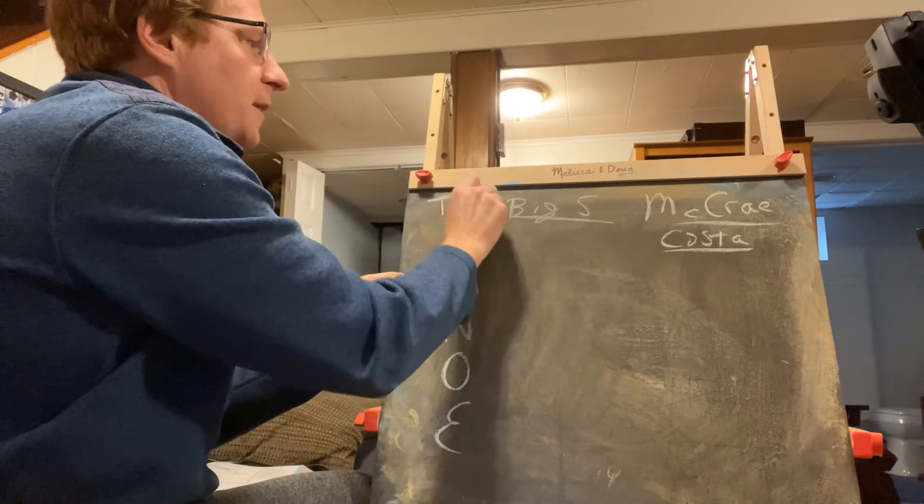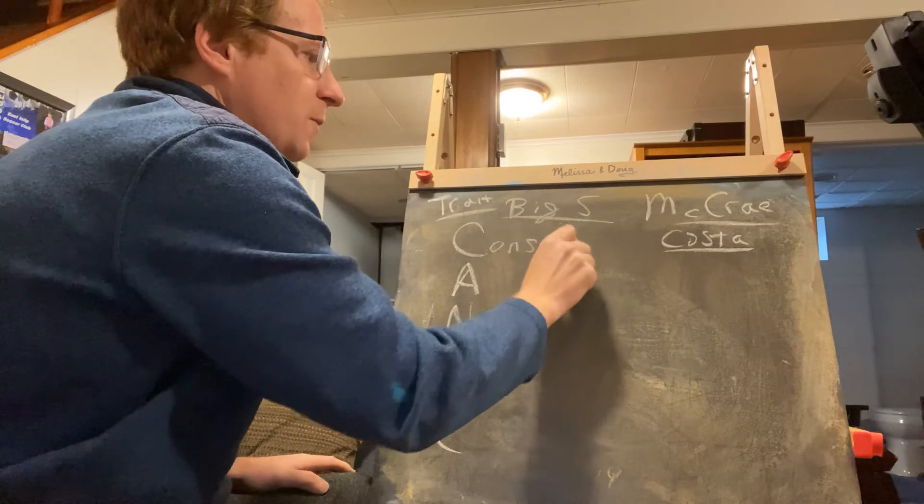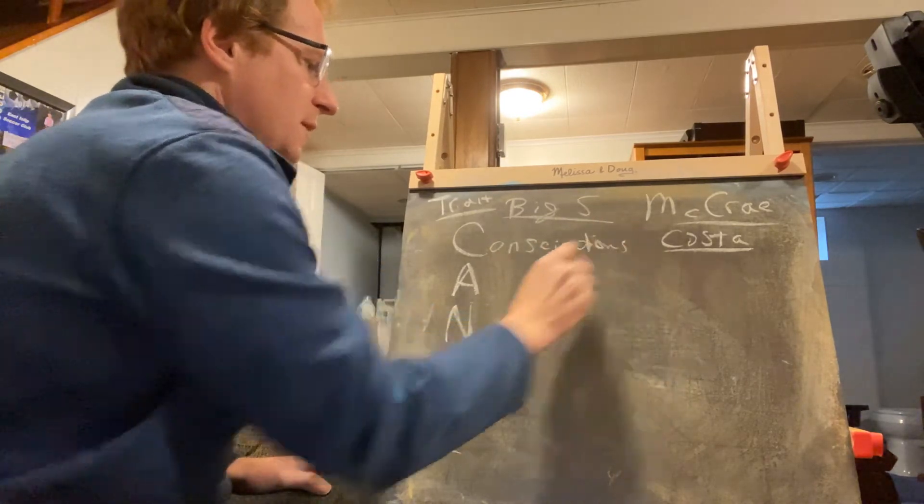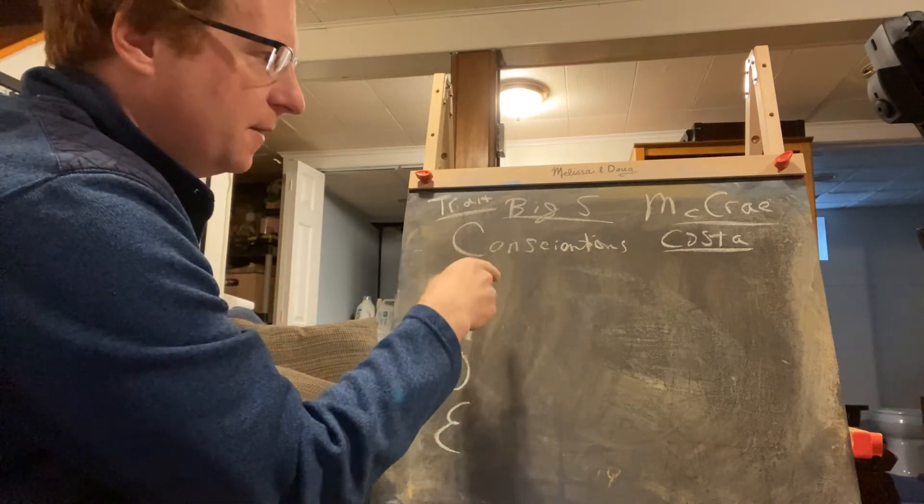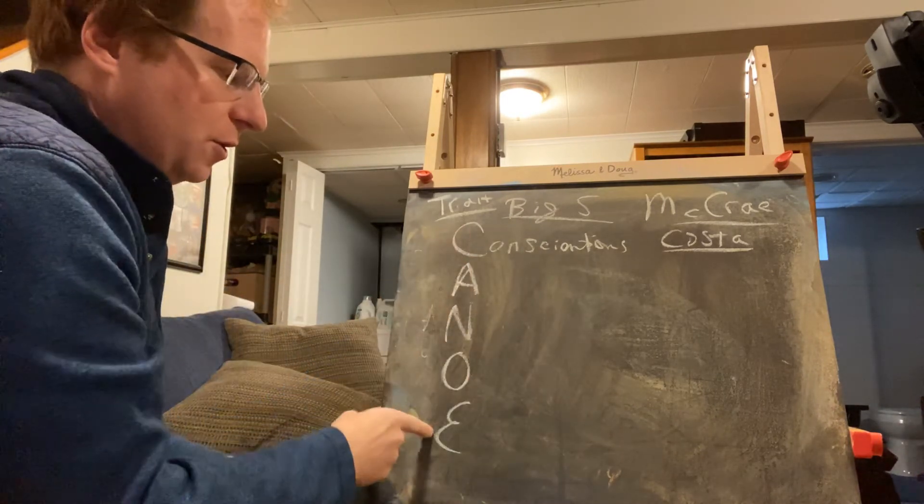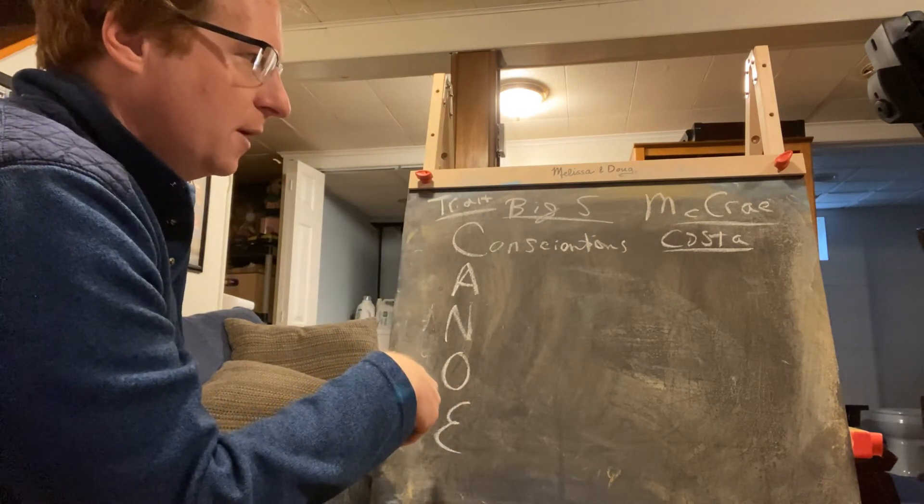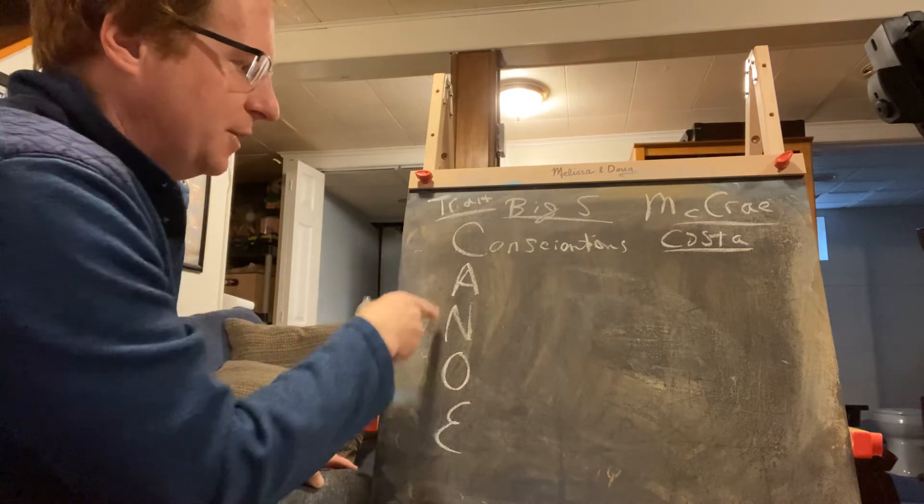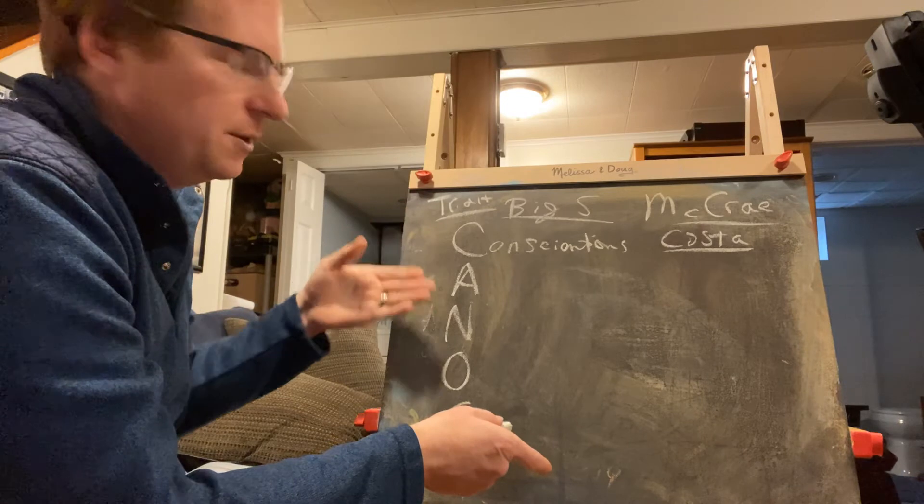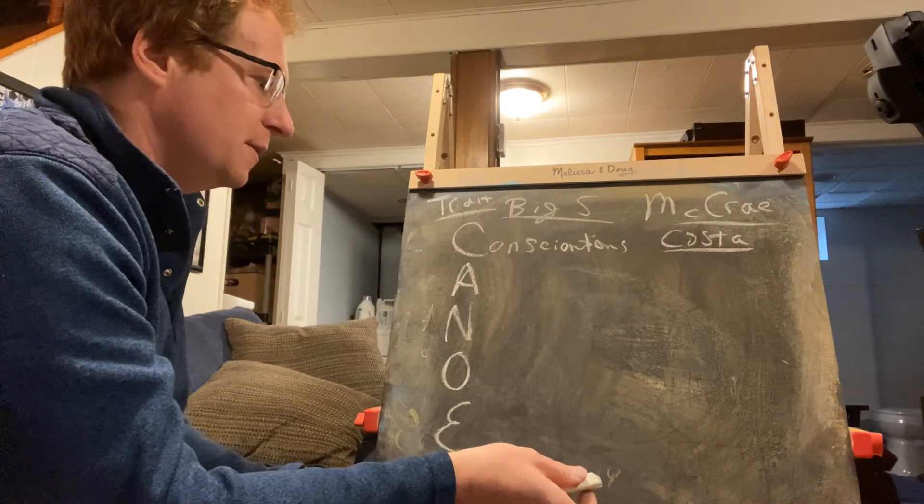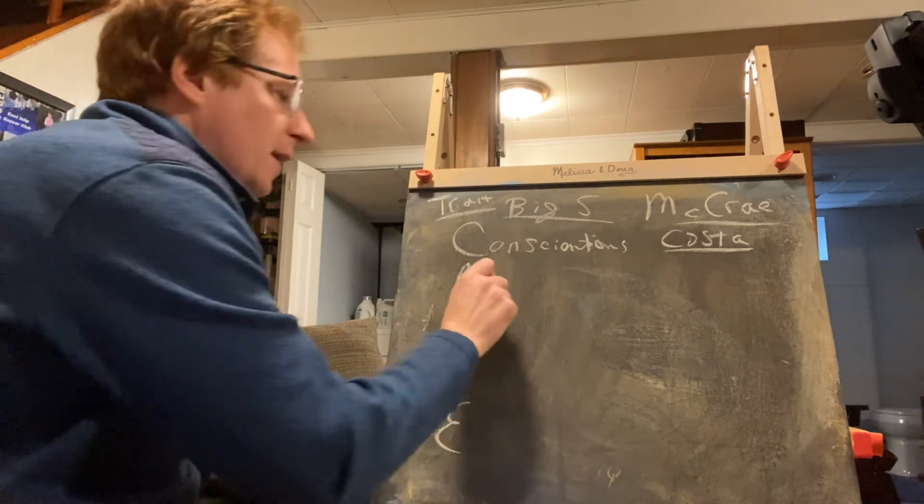The Big Five are sort of the end-all, be-all in personality psychology. This is all part of the next module on traits. Next time we'll go through all these things. The acronym CANOE, or you could rearrange it to be OCEAN, goes through the different adjectives that would describe you. That's basically what trait is—here's adjectives that describe you most of the time, and this is how you're going to respond to things.